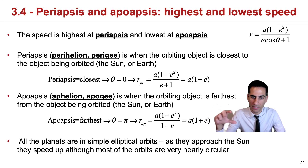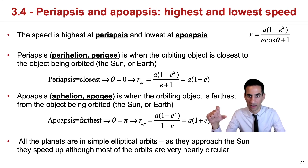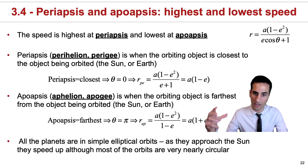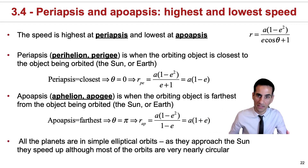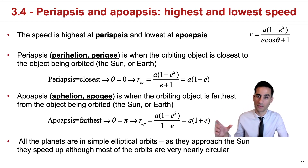In a similar way, we can actually get an expression for the furthest distance that an object will ever be if it's orbiting in an elliptical orbit. This is achieved by setting theta to pi instead of zero, and with similar arguments, instead of getting a times one minus e, you get a times one plus e.